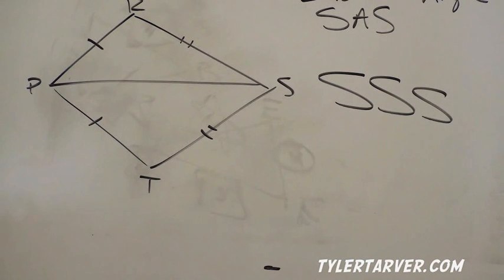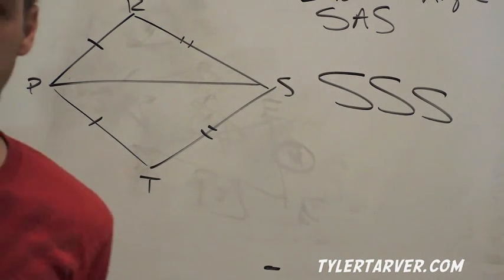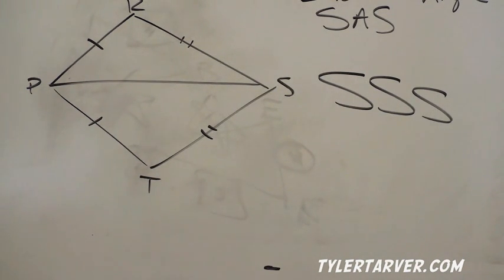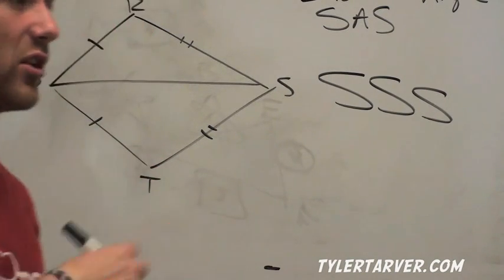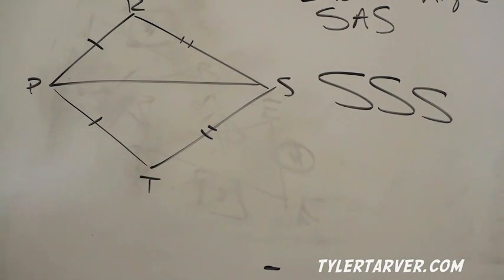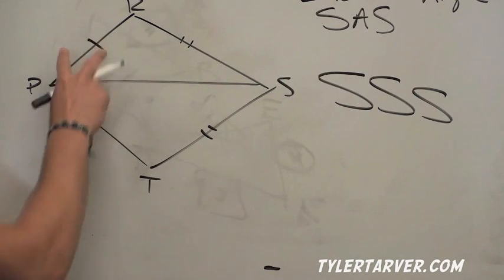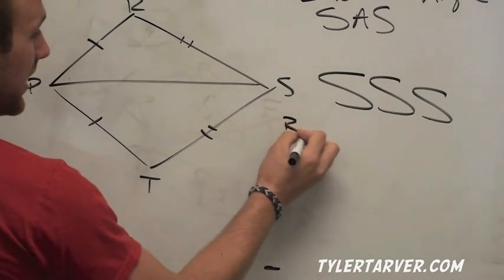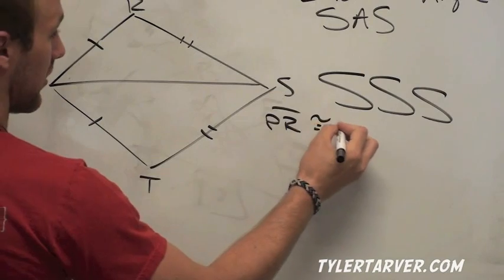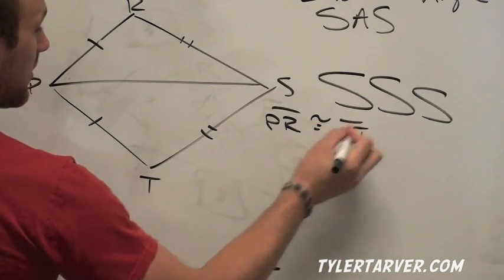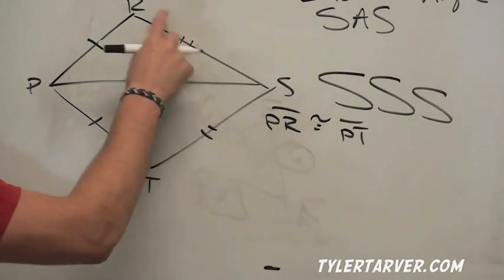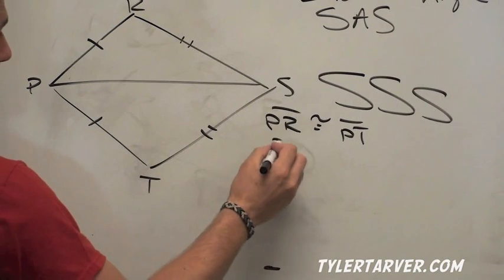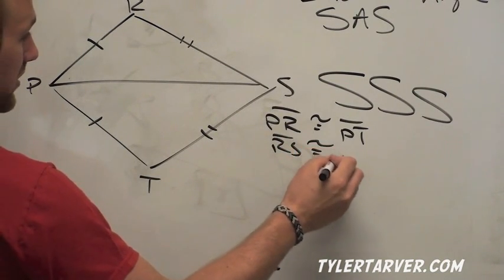We want to prove these two triangles are congruent using SSS, which is the only one I've taught you. We know PR is congruent to PT because we got a little dash there. We know RS is congruent to TS because of those marks.